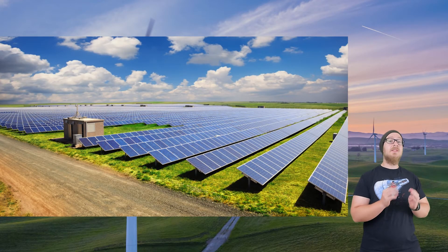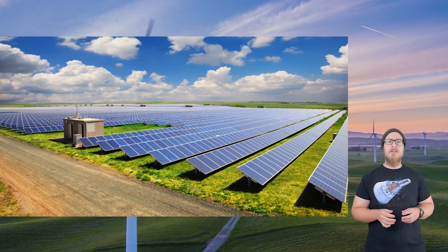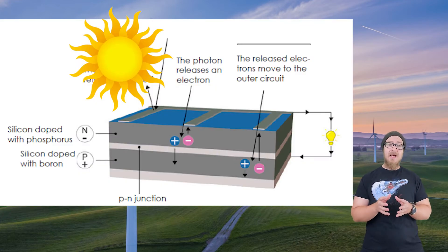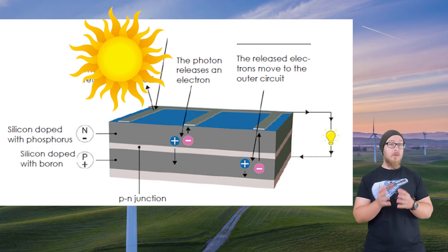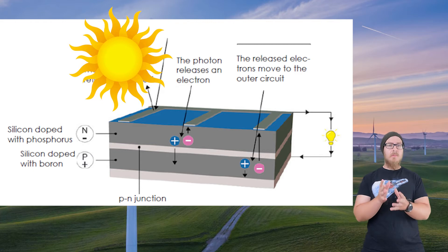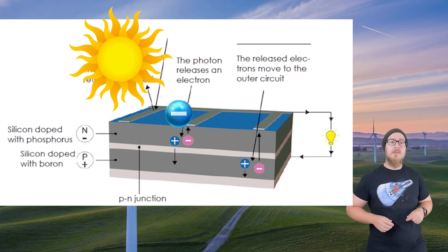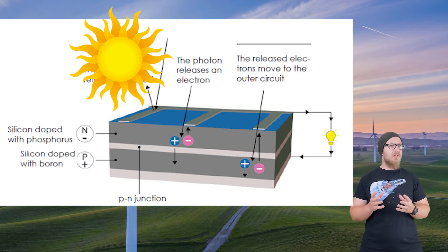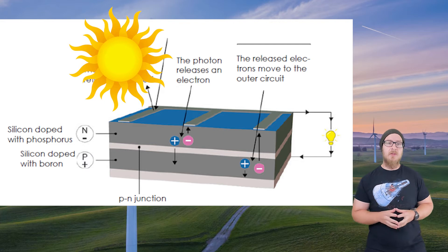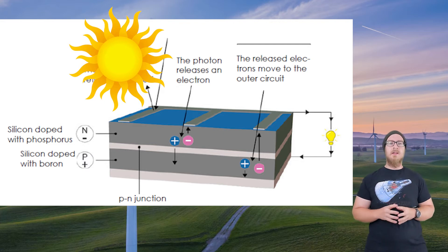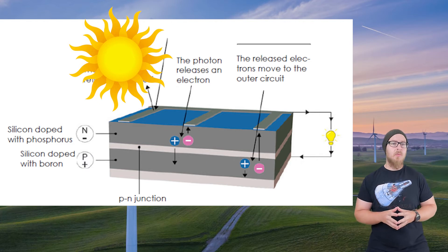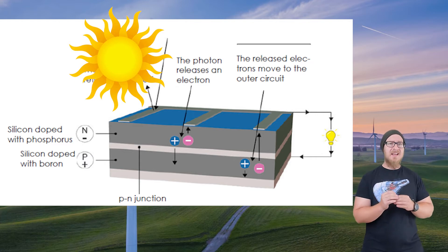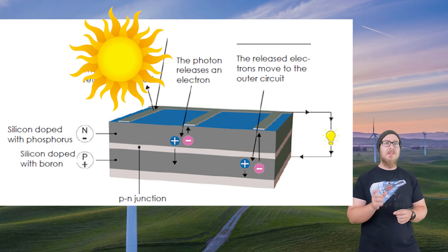Solar energy uses the sun's energy to produce electricity in several ways. A photovoltaic cell uses layers of a semiconducting material, silicon. When a photon — a particle of light — hits one side of the cell, it causes electrons to leave their atoms. To produce an electric current, all electrons need to flow in the same direction. The layer facing the sun has phosphorus in the material, which has one more electron than silicon. The other side has boron, which has one fewer electron than silicon. As a result, the sun-facing layer has a slight negative charge and the other side has a slight positive charge.